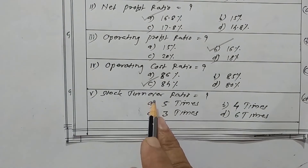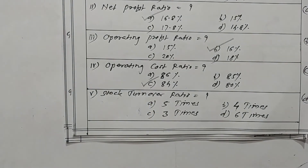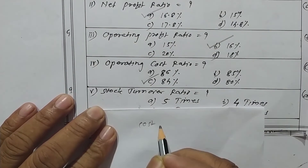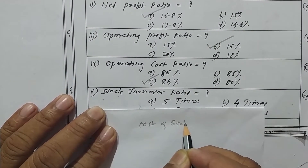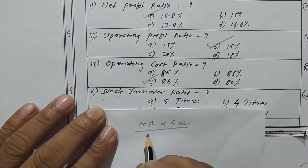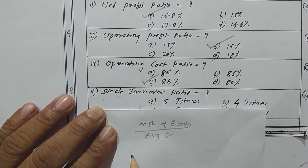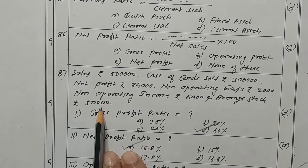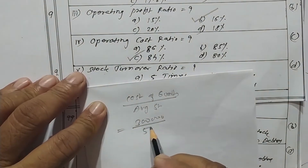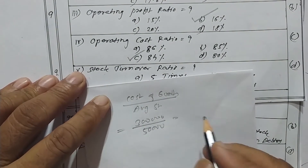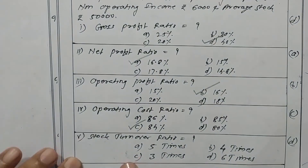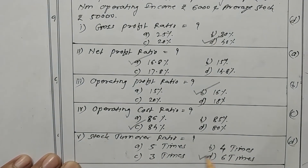Now what is the stock turnover ratio? The formula is cost of goods sold upon average stock. Cost of goods sold is rupees 3 lakhs and average stock is rupees 50,000. So 3,00,000 divided by 50,000 gives 6 times. Option B is the correct one.